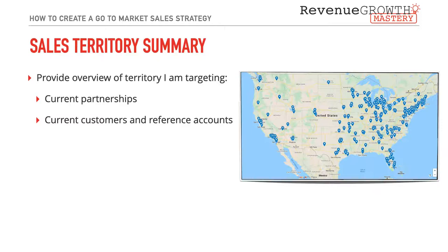Next is your Sales Territory Summary. Provide an overview of the territory you're targeting — look at existing partnerships within that territory and where you can leverage their relationships and resources to penetrate the market. There are really only three ways to grow business: cold call, network, or market — or all three simultaneously. Leverage your network and partnerships to maximize engagement with net new prospects, and use current customers and reference accounts to support growth of new business.